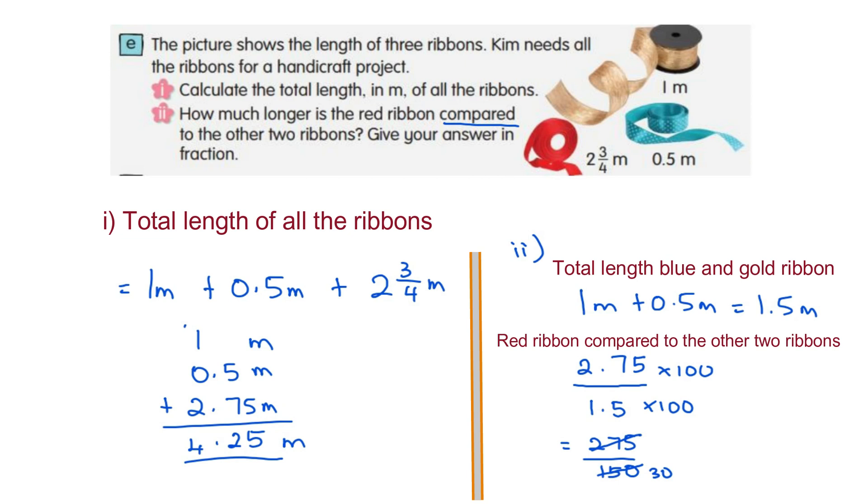Divide by 5 again. We'll get 11/6. Convert to mixed fraction, we'll get 1 5/6 meters.